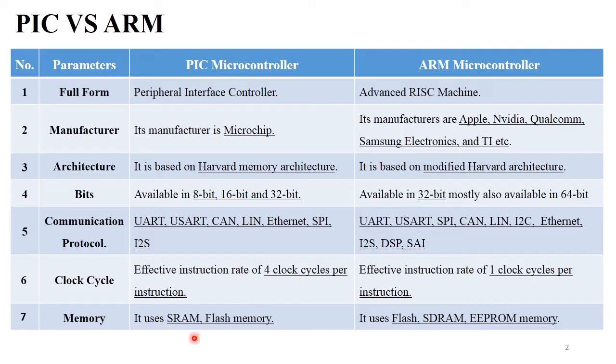PIC microcontroller uses SRAM and flash memory for different manipulations, while ARM microcontroller uses flash, SDRAM, and EEPROM memory for manipulations.